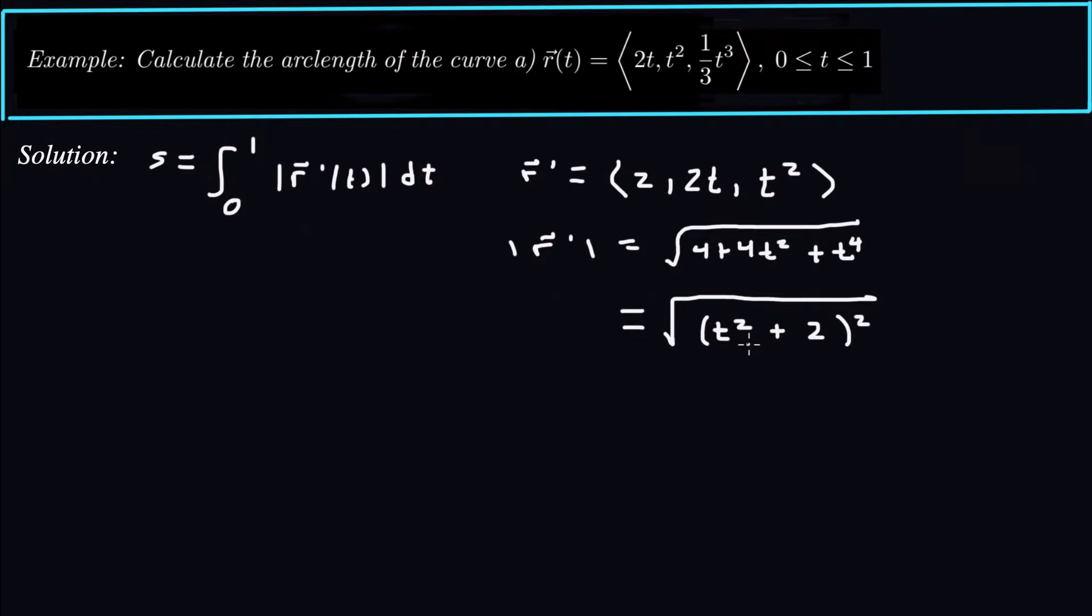Let's just make sure that that is actually the perfect square. If I square it out, that's going to give me t to the 4 plus multiply and double. So that's 4t squared plus the last one squared, which is 4. So yeah, this is actually what it should be under the radical.